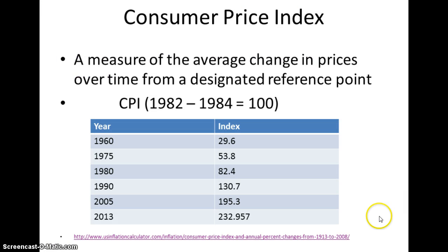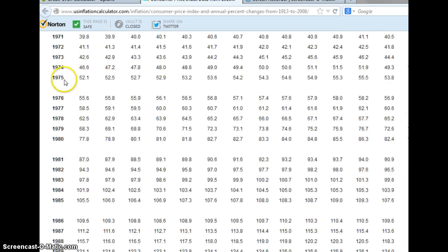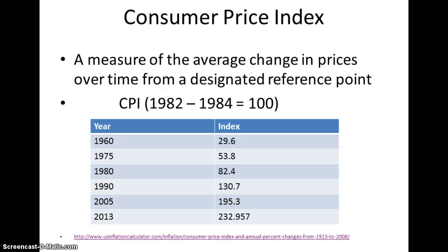Another application is to use the Consumer Price Index. The Consumer Price Index is a measure of the change of prices. The reference point is 1982 to 1984. I've listed a number of years in the chart here, but we can also visit the website, where we'll find Consumer Price listed by month since 1913 all the way up to 2013. How do we solve these problems? We use algebra.